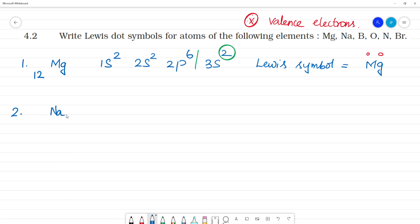Sodium is having atomic number 11. For the electronic configuration: 1s², 2s², 2p⁶, 3s¹. So this is the Lewis symbol. The Lewis symbol is Na. We have to do one electron.